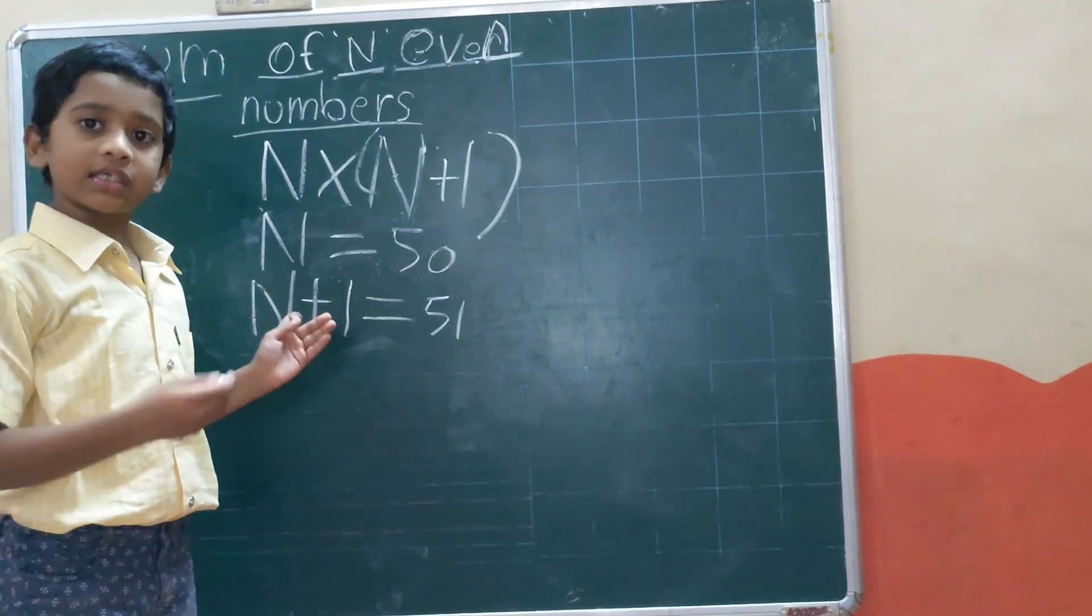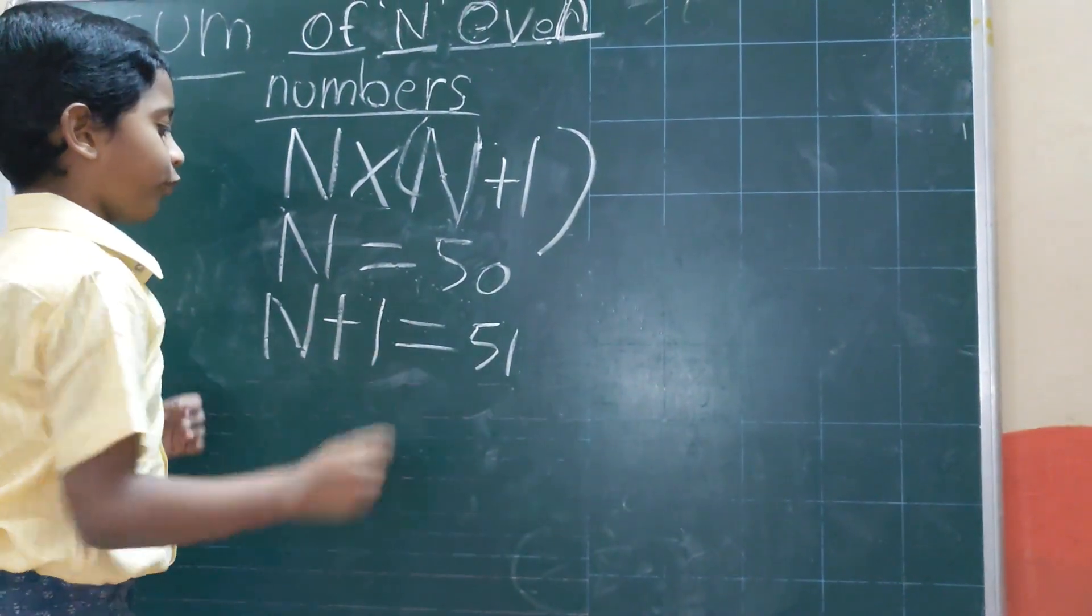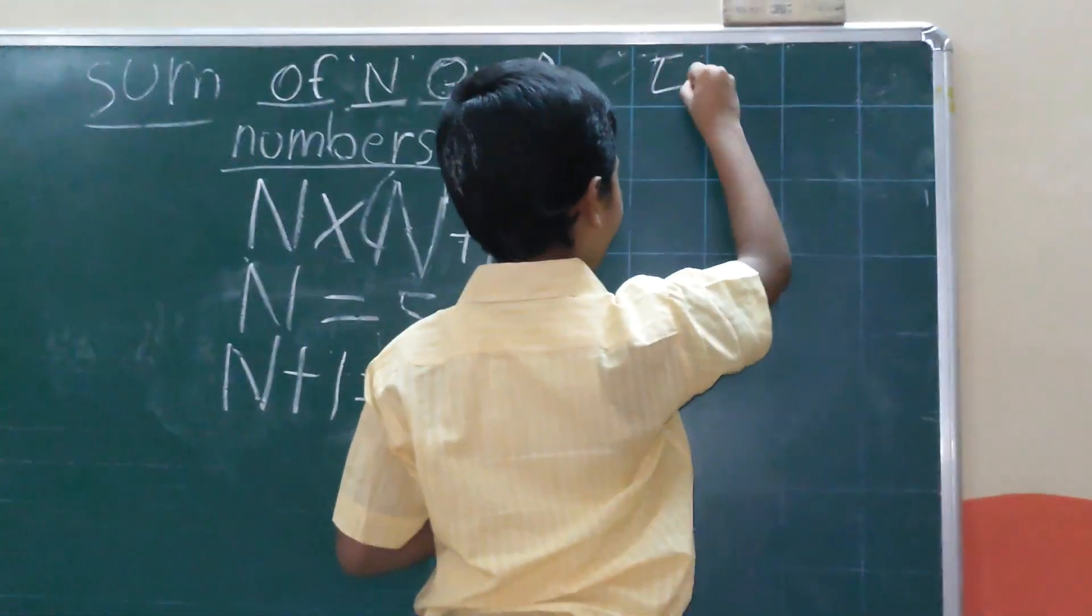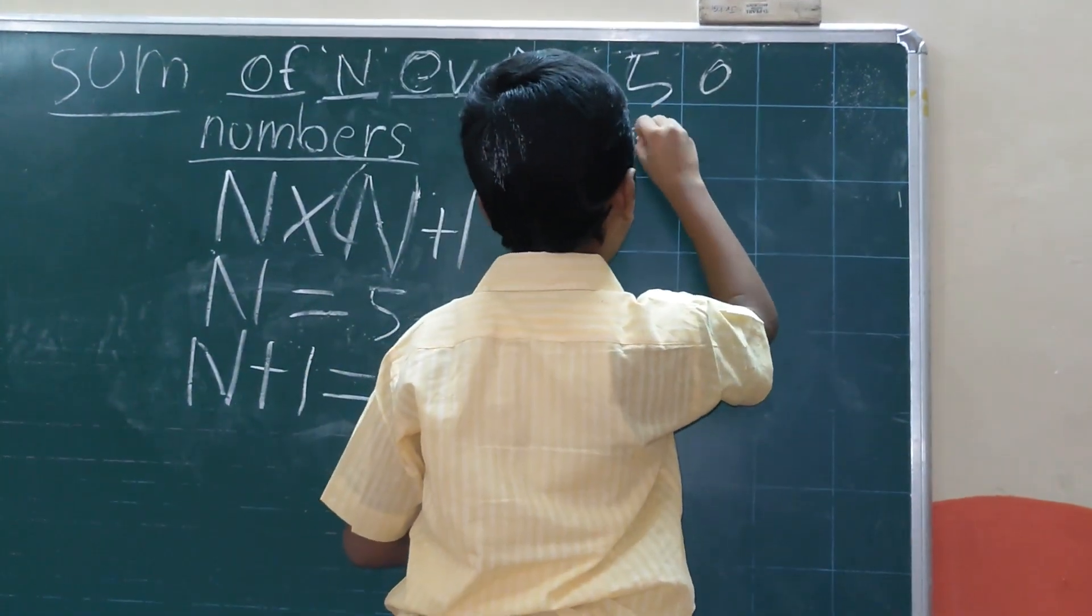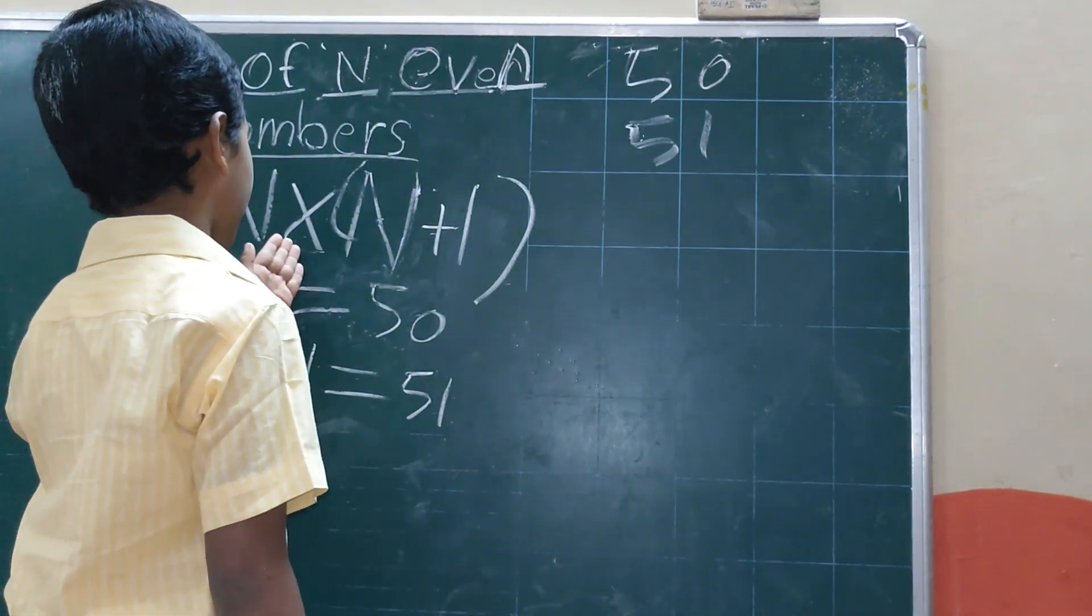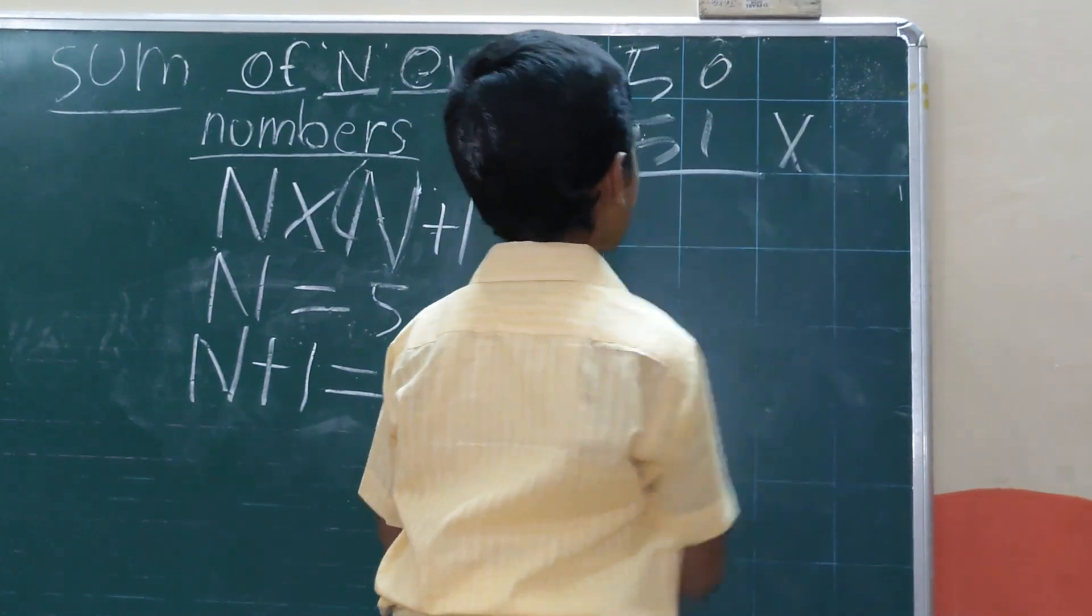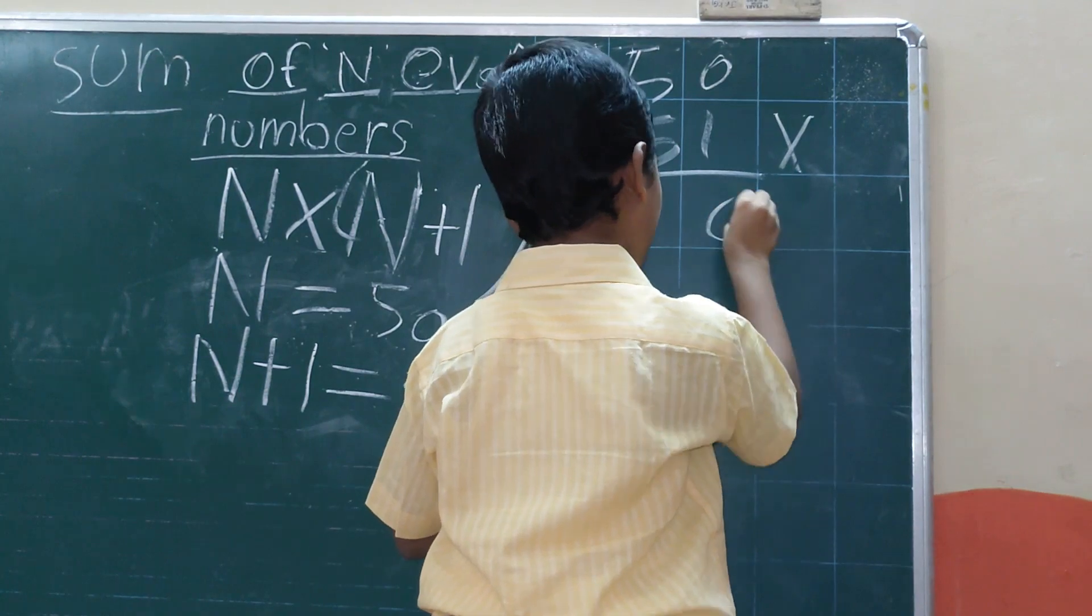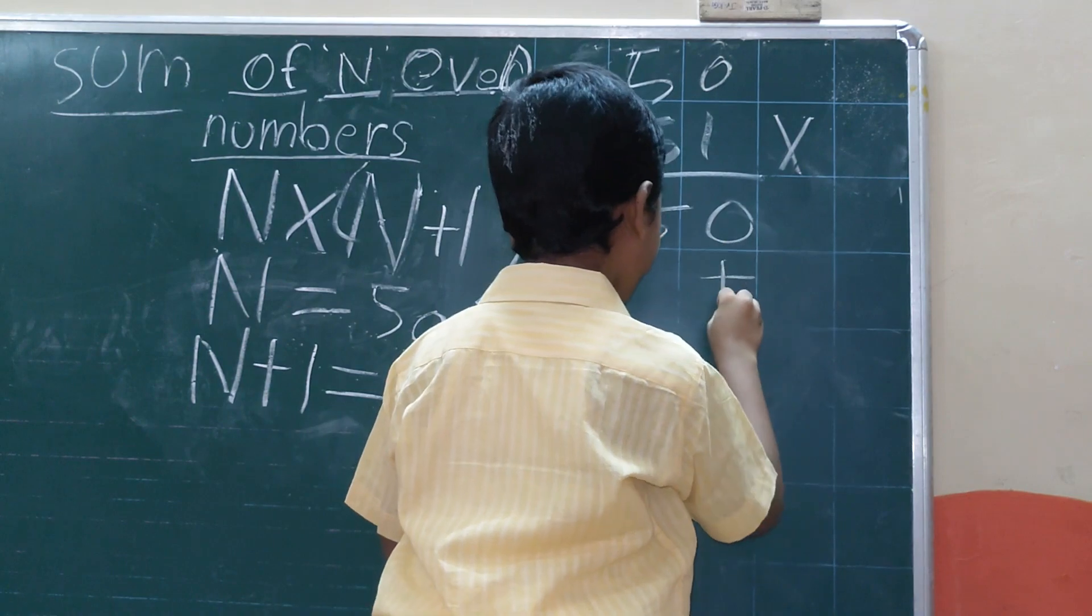Now using the same formula we have to do. We have to keep both numbers in the formula. n is equal to 50, n plus 1 is equal to 51. Then here is one more thing, we have to multiply by 2.